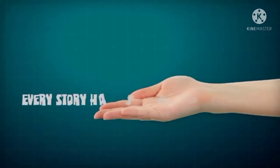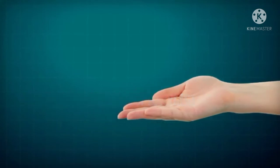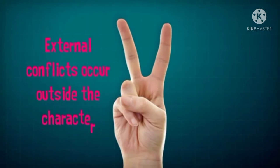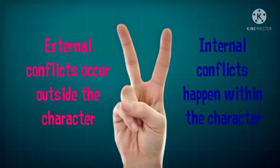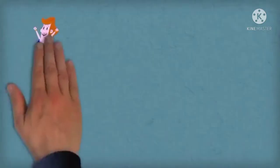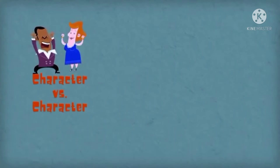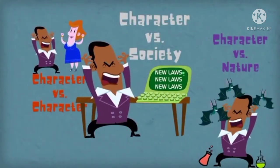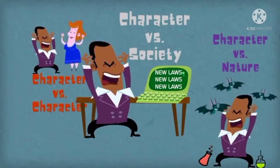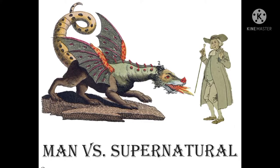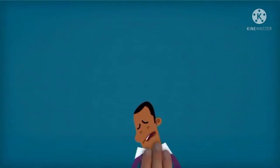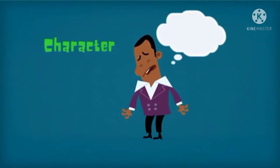Let's review. Every story has a conflict. External conflicts occur outside the character, while internal conflicts happen within the character. Four types of external conflicts: character versus character, character versus nature, character versus society, character versus supernatural. There is one type of internal conflict: character versus self.